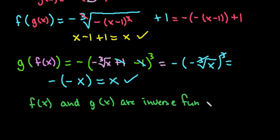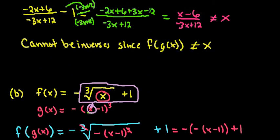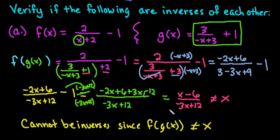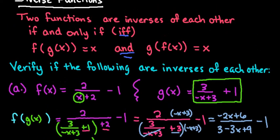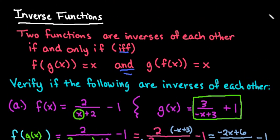Remember, you have to check both directions — both must give you x. If the first one gives you x you do have to check the second one. If the first one does not give you x, like in the first problem, you don't have to check the second because it's impossible for them to be inverses if one doesn't work. As always, thanks for watching — if you have any questions or other topics you'd like me to cover, please let me know.